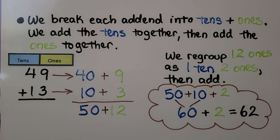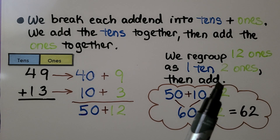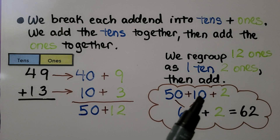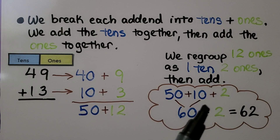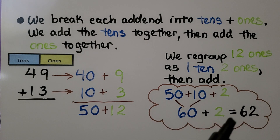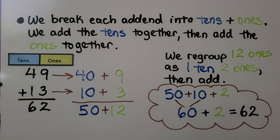We add the ones: 9 plus 3 is equal to 12. Now we have 50 plus 12. We regroup 12 as 1 ten and 2 ones. 50 plus that 10 makes 60. We add the 2 ones left over. 49 plus 13 is equal to 62.